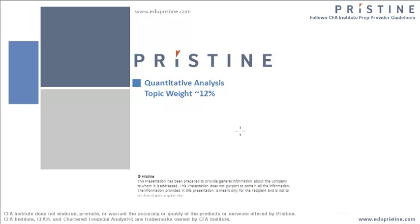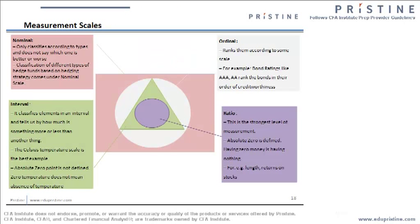Hi, this is Anil from Pristine. In today's session, we will talk about one of the most important topics of the CFA Level 1 exam, which is quantitative analysis. This topic carries a weight of 12%, so you will get 28 questions out of 240. In today's class, we will specifically target the four measurement scales, and from my experience, I can assure you that you will definitely get one or two questions out of these four scales. So if you master these four scales, you will definitely get two or more right answers out of those 28 questions.